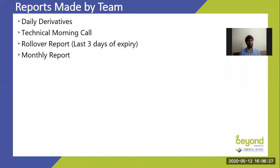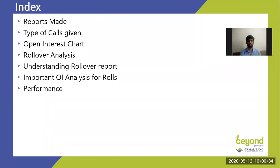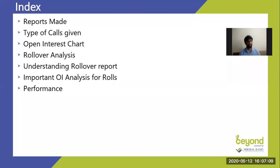I've made an index of what I'm going to do today. We'll start with what reports we make overall, what types of calls we generate, then the analysis part of how to read the open interest. Open interest is very important for rollovers. Then comes the rollover analysis — I'll take you through the reports we've made and how to read them. There are two parts of rollovers: the report part and the stock part. And then performance. Let's start.